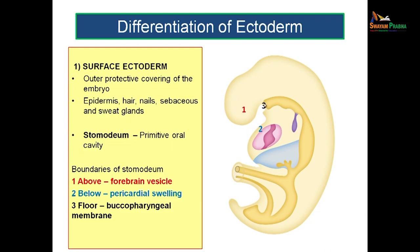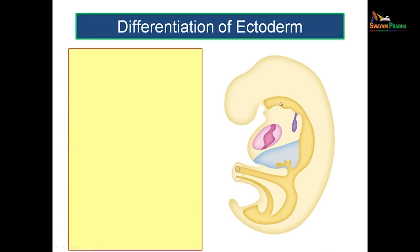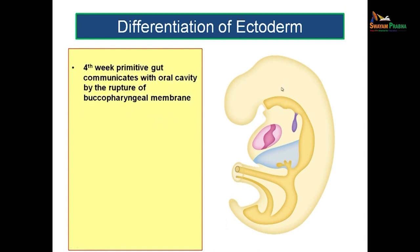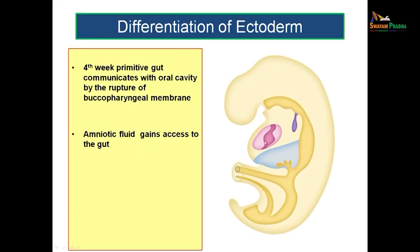As this membrane ruptures, communication is maintained between the oral cavity and the primitive gut. In the fourth week, the primitive gut will communicate with the oral cavity by the rupture of the buccopharyngeal membrane. The reason this is needed is that the amniotic cavity surrounds the embryo and contains nourishing fluid. If this buccopharyngeal membrane ruptures, the fetus will be able to swallow the amniotic fluid, which will enter the gut tube. Since the placenta is not yet fully established, the amniotic fluid entering through the primitive gut helps in nourishment of the developing embryo.